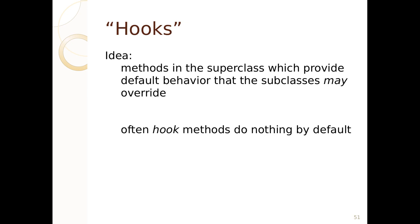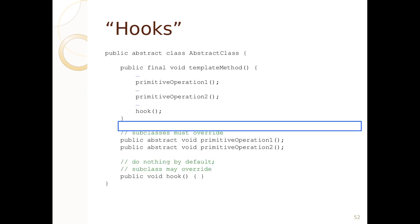Often times, you can have the default template method work, and you can have the hooks do nothing by default, allowing for subclasses to override. You might have a template method where you force overriding, but then have a default operation that could be overridden but does nothing by default. For example, if you had header and footer, you could have an empty implementation of header and an empty implementation of footer, but you would allow the developers to provide header and footer methods.